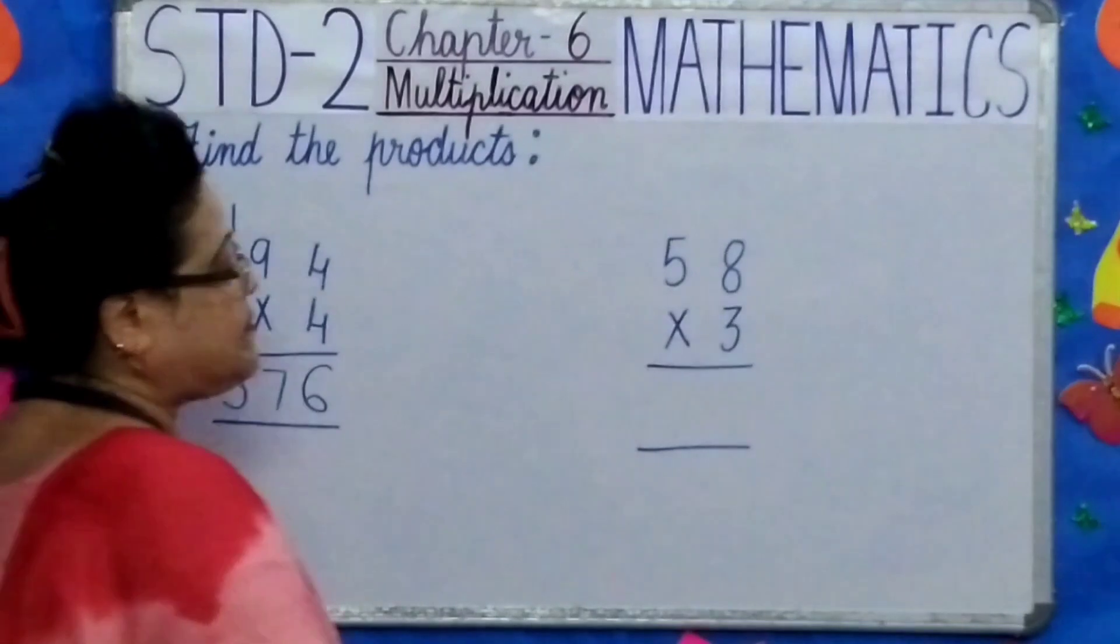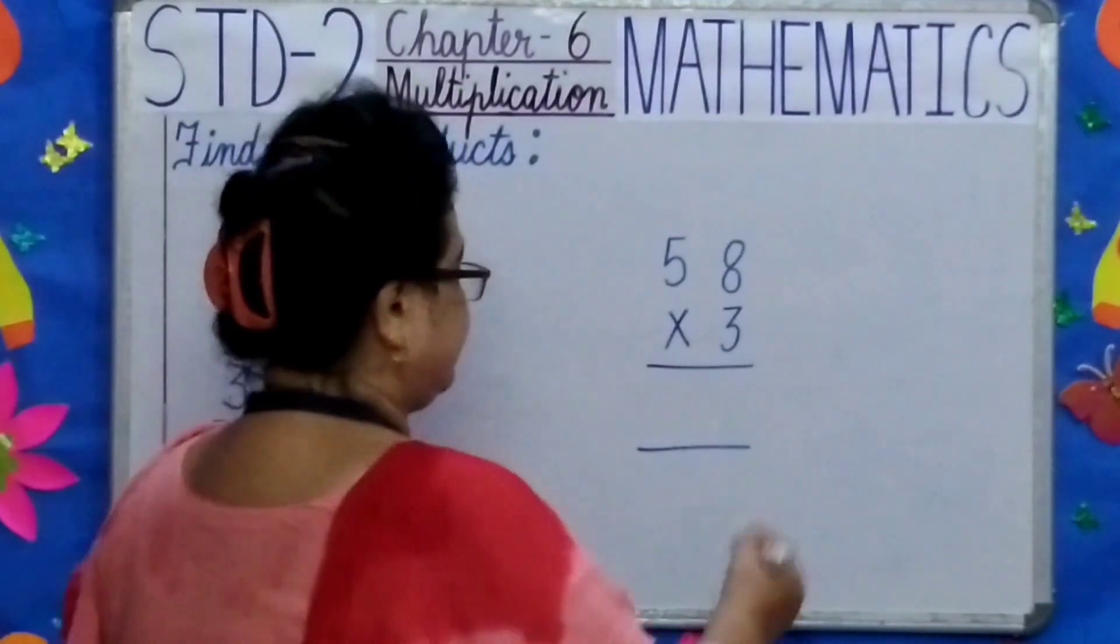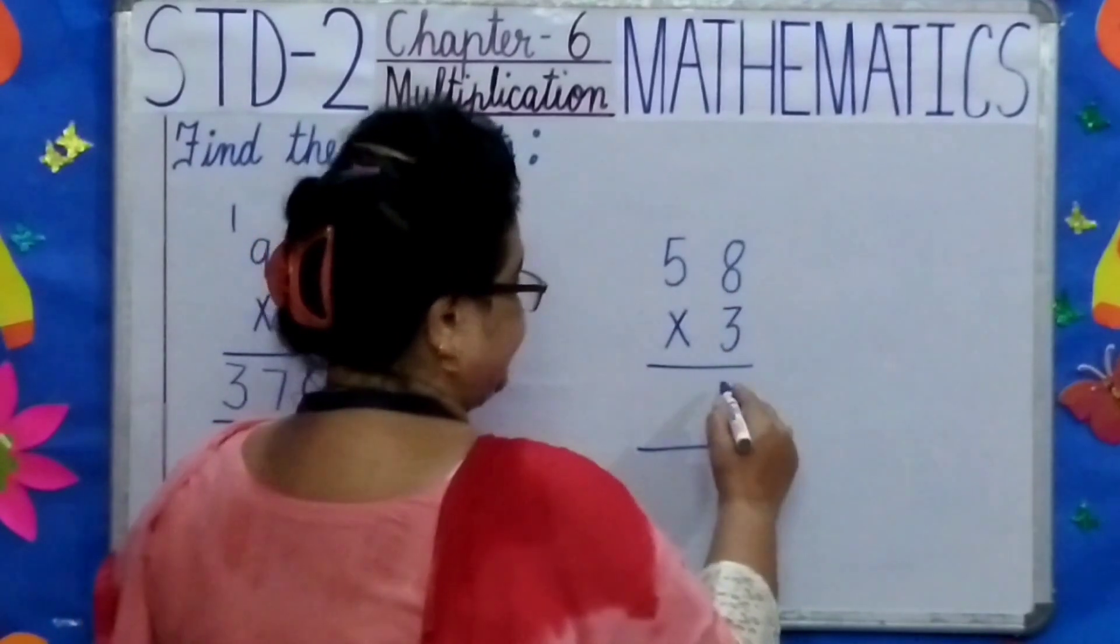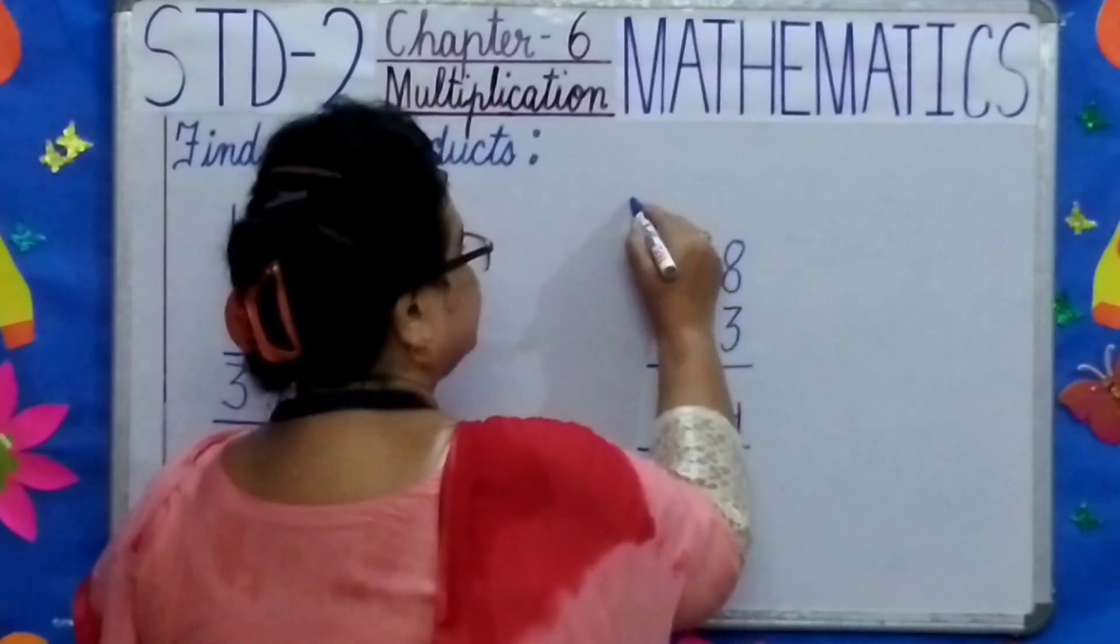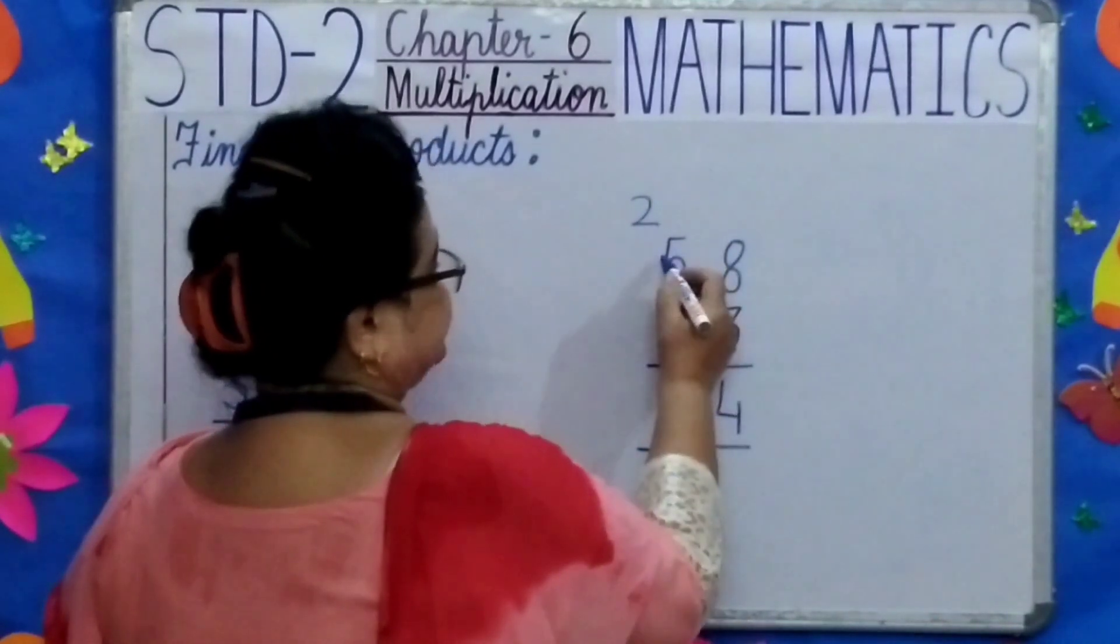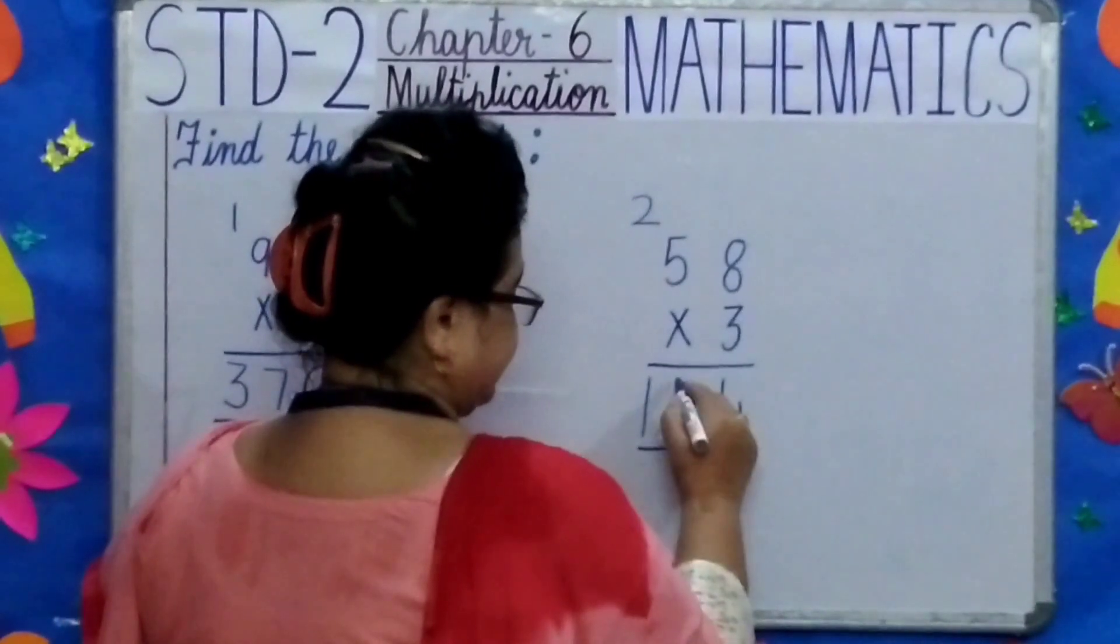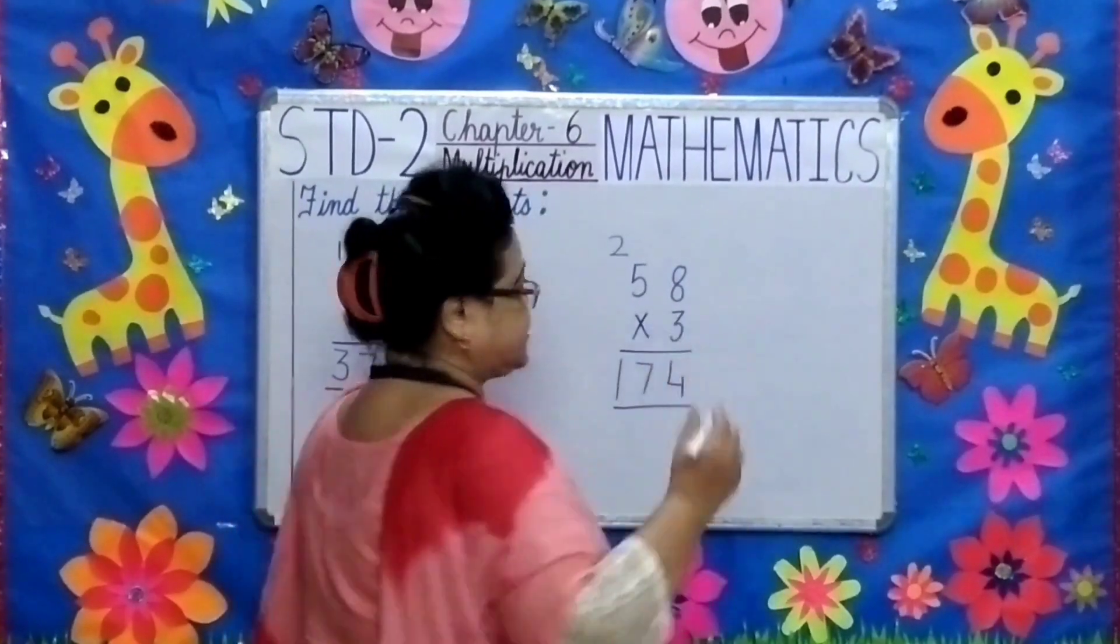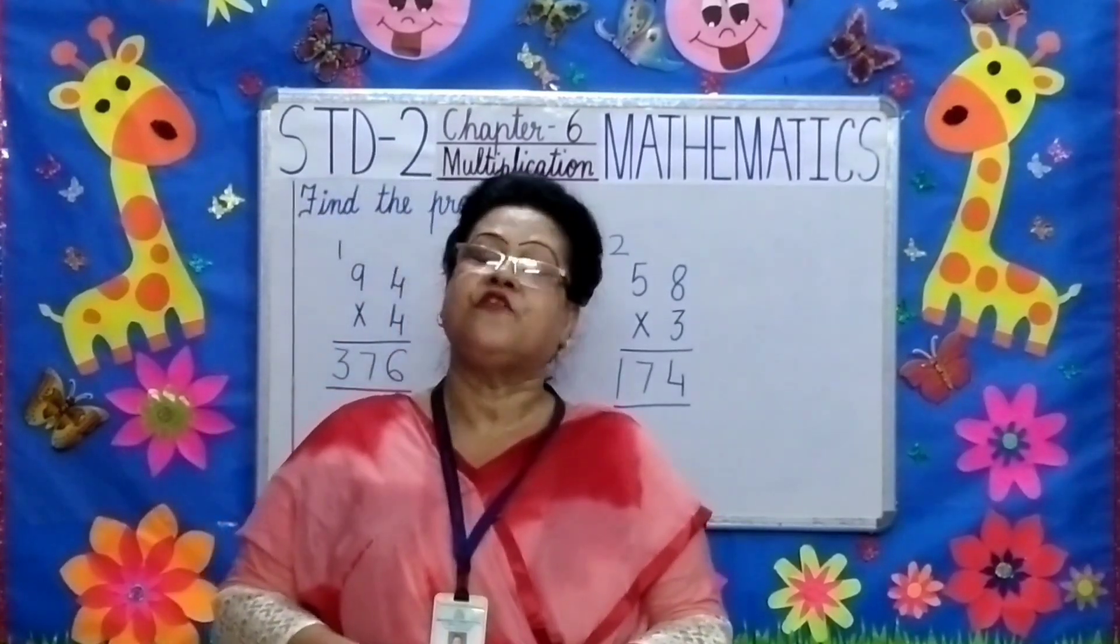Now see the second sum. 58 multiplied by 3. 3 eights are 24. 4 carry 2. 3 fives are 15. Plus 2, 17. What is your answer children? 174.